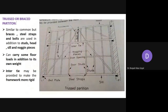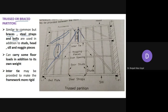The truss or braced partition is similar to the common type of partition, but it is provided with additional members called braces — which are inclined supports — along with steel straps and bolts. As you can see, the inclined arrangements are called braces, and above the door opening, a bolt is provided connected with the bracing.